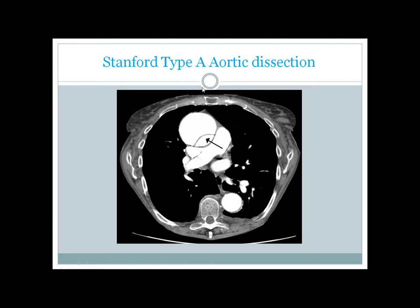If you see the structures here, this is the anterior chest wall, this is the sternum, those are the ribs, and this is the chest wall. This is probably a female patient, and those are the scapulae here. Those black zones are the lung fields, those are the pulmonary vessels, here is the vertebra, and these are the back wall muscles.